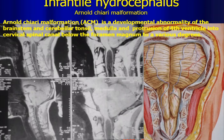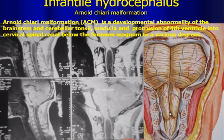Surgical intervention involves posterior cranial fossa decompression and cervical spine decompression. We then perform a duraplasty to create more space, relieving the compression of the tonsils and brainstem from their descent.